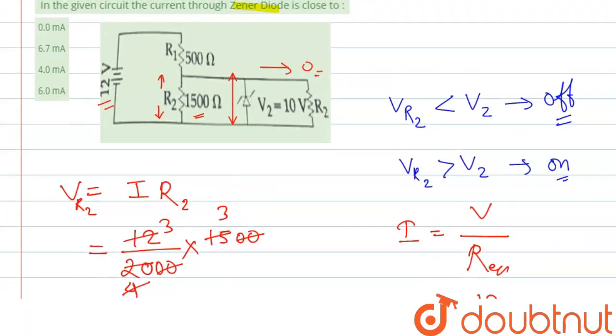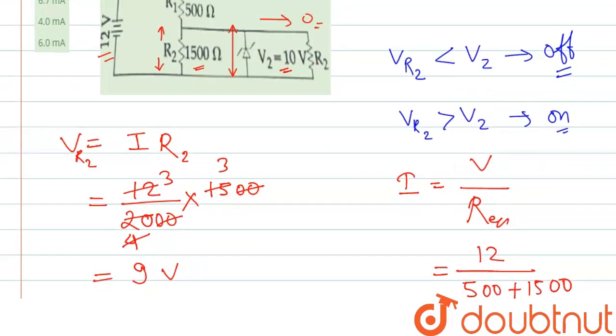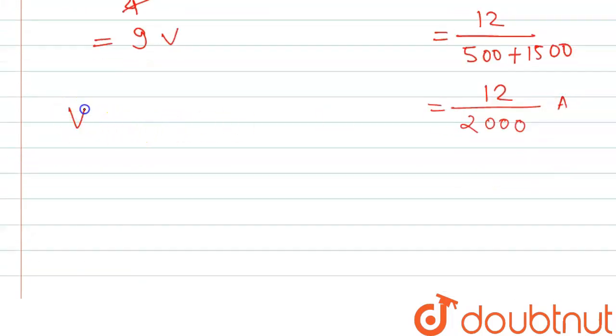So now if we check the voltage across the Zener diode, there is 10V. So here we see that the voltage across R2 is 9V and voltage across the Zener diode is 10V.